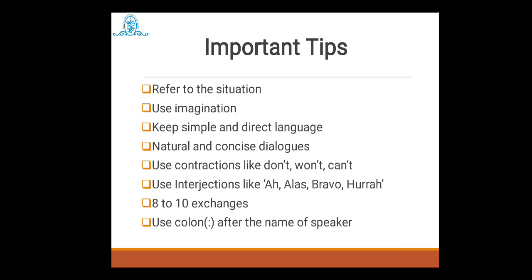While writing dialogues, you have to follow certain important tips. First, you have to refer to the situation — read it very carefully. Then, on the basis of that situation, use your imagination and accordingly put forth and elaborate the points. When you elaborate all related sub-points, use very simple and direct language — avoid difficult words. You should develop dialogues that sound natural and are very concise. Avoid lengthy sentences comprising two or more lines, as it becomes confusing to the reader. You can use contractions such as 'don't', 'won't', or 'can't' instead of 'do not', 'will not', 'cannot'.